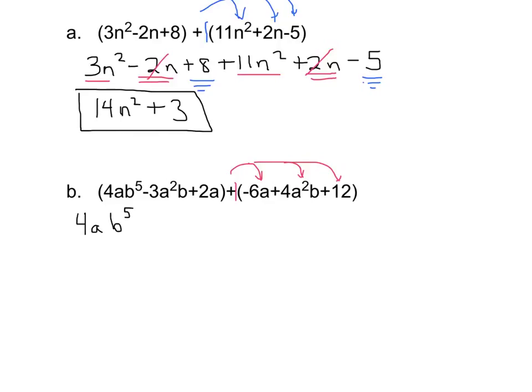Minus 3a squared b plus 2a, and now we distribute the one. 1 times negative 6 is a minus 6a, 1 times 4a squared b is again positive 4a squared b, and then positive 1 times positive 12 is a positive 12.